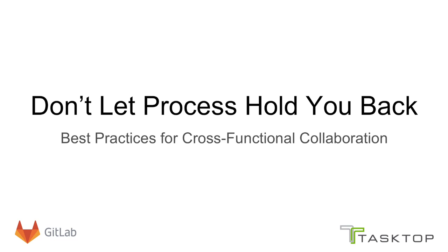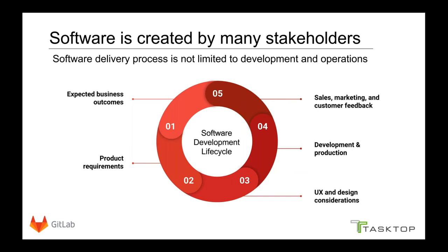Before we dive into best practices for cross-functional collaboration, we want to provide context around the environment in which software is often delivered at larger organizations. While many people think software is mostly about writing code and doing some testing, the full end-to-end lifecycle spans many more stakeholders — including business outcomes, sales, marketing, customer feedback, and UX and design considerations — all of which need to be integrated to build impactful products.